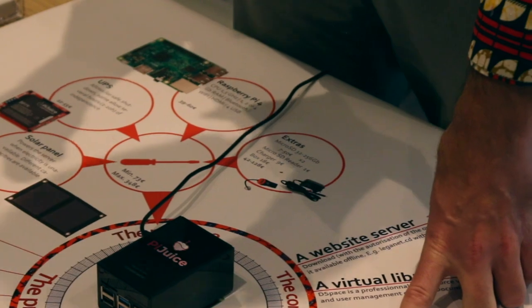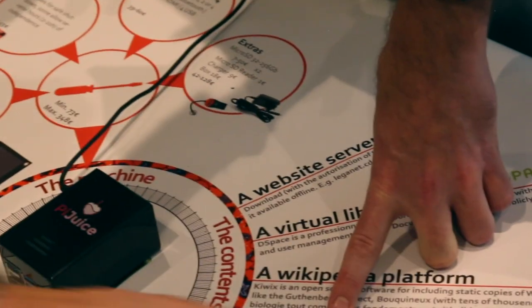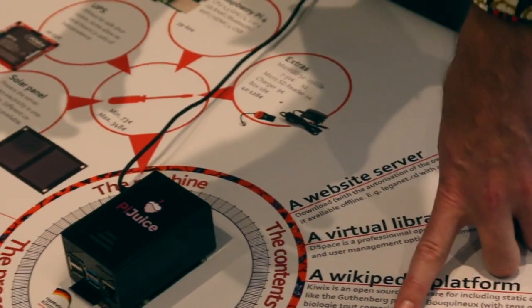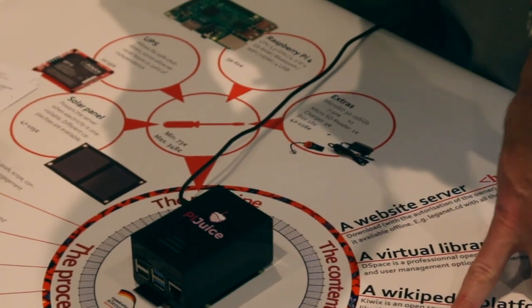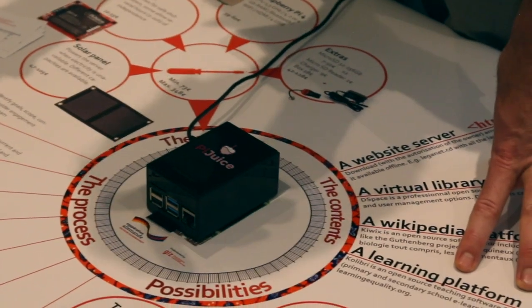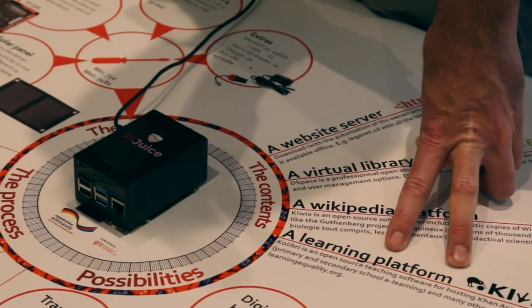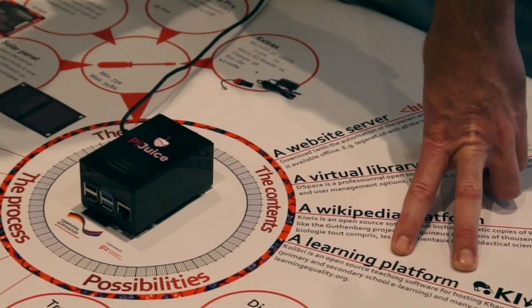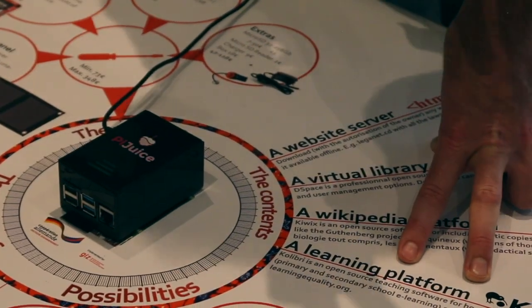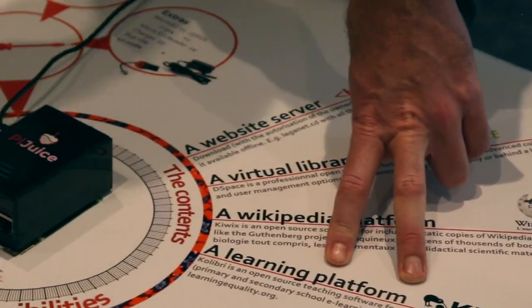And then there's a learning platform called Colibri, where you can download children's books. It features teaching software including Khan Academy for primary and secondary school, resources for teachers, reading books for small children and older children — basically any kind of resource for students from around 5 to 18 years old.